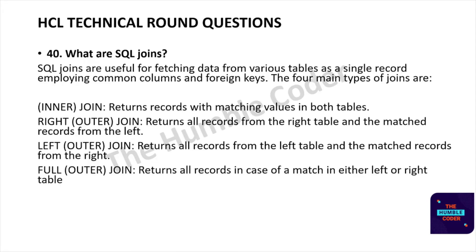The next question is: what are SQL joins? SQL joins are useful for fetching data from various tables as a single record using common columns and foreign keys. The four major types are: inner join (returns records with matching values in both tables), right outer join (all records from the right table and matched records from the left), left outer join (all records from the left table and matched from the right), and full outer join (all records when there's a match in either left or right table).